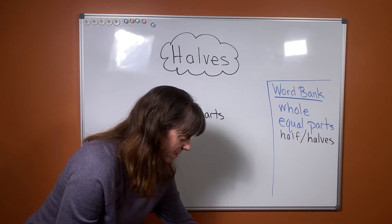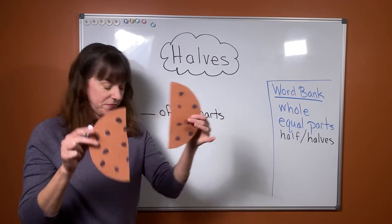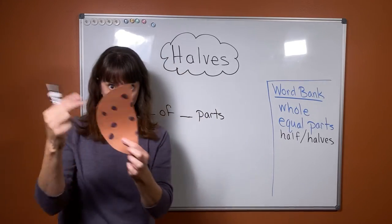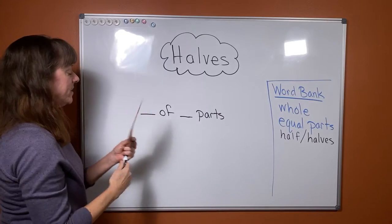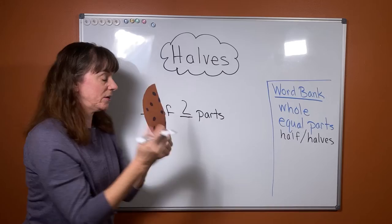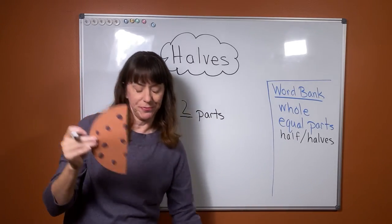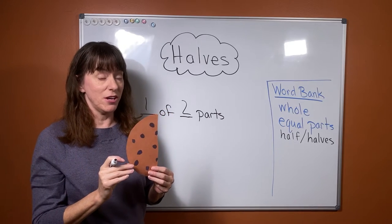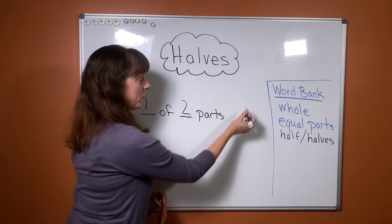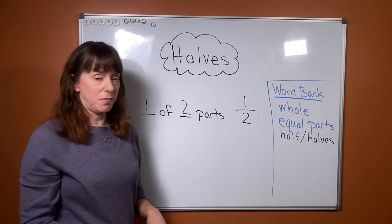So if we are looking at that, I'm going to go back to our cookie. If I'm only talking about one part, one of the two halves, I can say I have one of two parts. Would you like to know there's another way to word that or another way to write that? One of two parts.